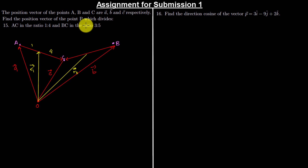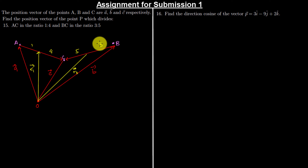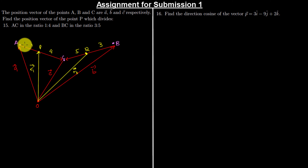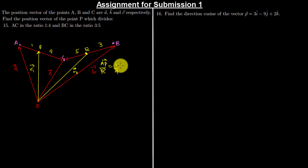For BC in ratio 3 to 5 — the orientation is 3 to 5 — this starts from B going to C. So we have 3 to 5. Let's call the point dividing AC as point P and the point dividing BC as point Q. Their position vectors will be R1 and R2 respectively.